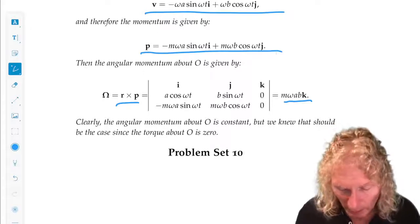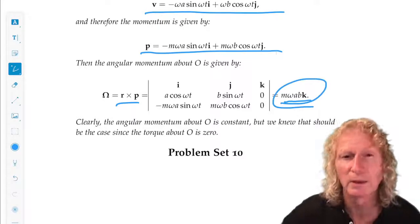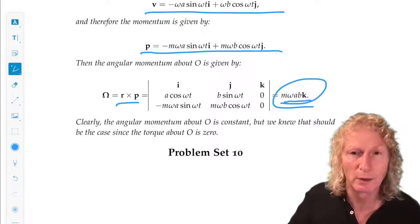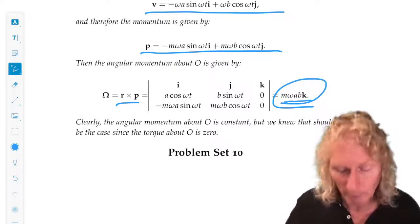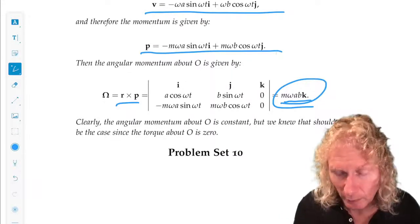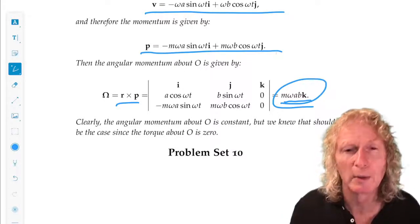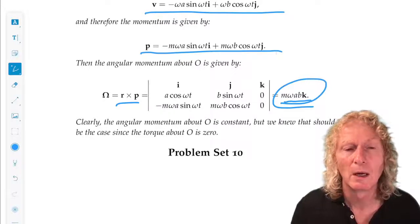And this is a constant angular momentum. It's a vector because angular momentum is a vector, but it is constant. It doesn't depend on time, although k doesn't depend on time, neither do m, omega, a, and b.